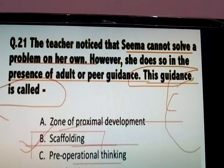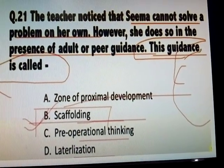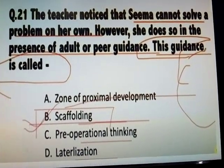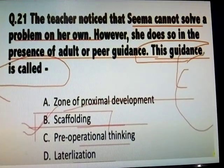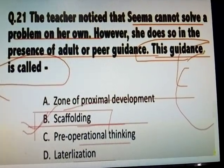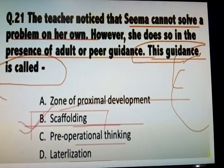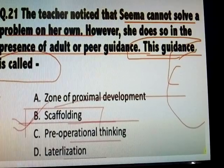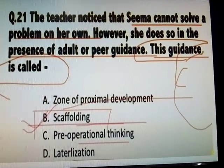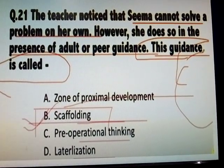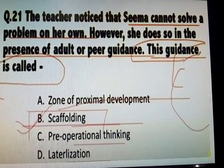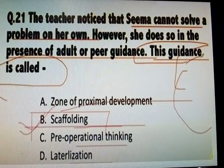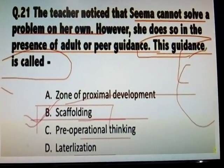The teacher noticed that Seema cannot solve the problem on her own; however, she does so in the presence of adults or with peer guidance. This guidance is called Answer B: Scaffolding.